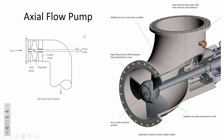An axial flow pump adds energy the same way — an impeller accelerates the fluid, adding pressure — but it allows a really long drive shaft mounted at the surface. The impeller can be submerged hundreds of feet underground in an aquifer while the motor stays at the surface where electricity and cooling are available. The key difference is that axial flow pumps don't change the direction of flow; the flow continues in the same direction on both suction and discharge sides.